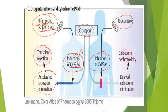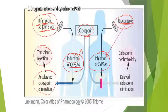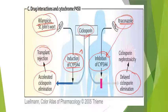When itraconazole is administered in the presence of cyclosporine, it causes inhibition of CYP3A4 enzyme. This inhibition causes delayed cyclosporine elimination, which ultimately causes cyclosporine nephrotoxicity.